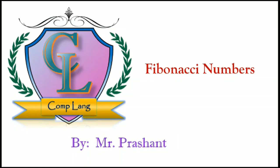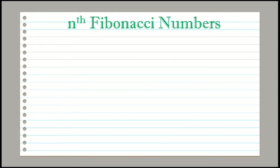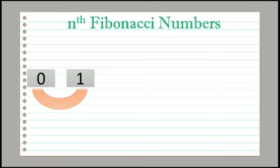Hello friends. In this video we will study algorithm and flowchart of Fibonacci numbers and some examples on Fibonacci numbers. The given problem is to find the Fibonacci numbers. Fibonacci is a series of numbers whose first number is 0 and second number is 1. The next number will be the addition of the previous two numbers. So 0 plus 1 is 1, and the third number will be 1.